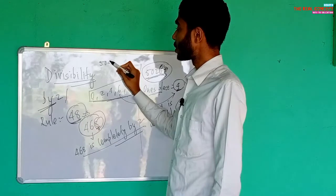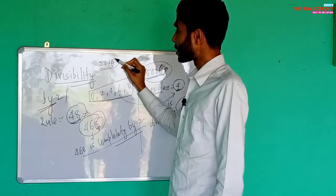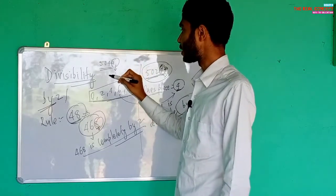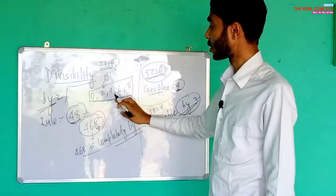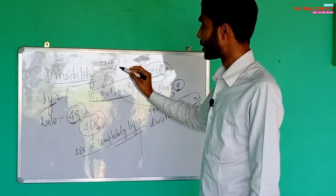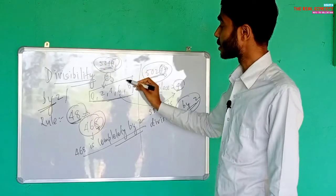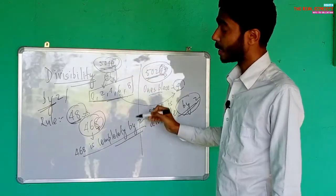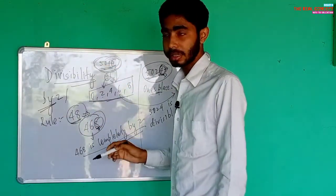For example, take five thousand and forty-nine, that is 5049. The digit at the ones place is nine. Nine does not belong to the group zero, two, four, six, eight. Therefore we can say that the number 5049 is not completely divisible by two.